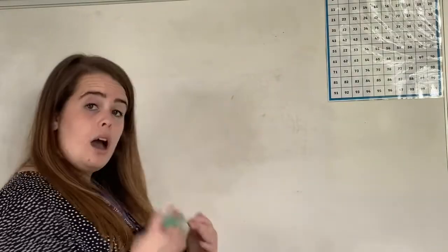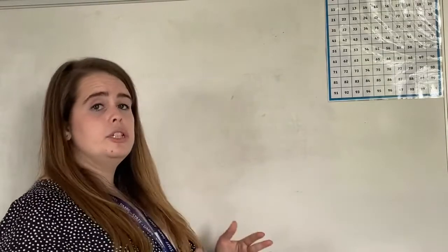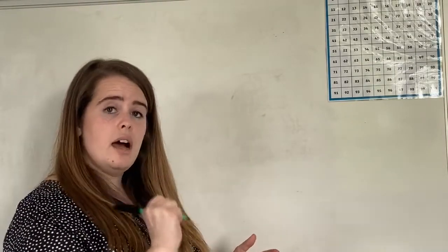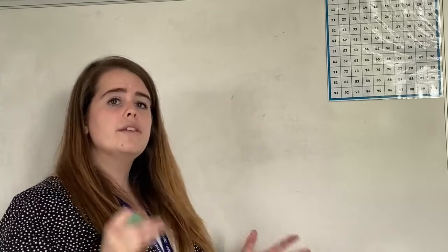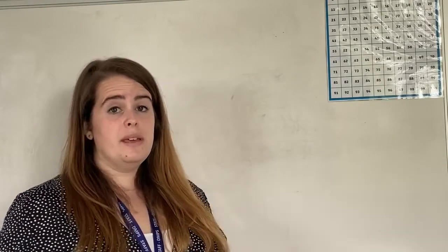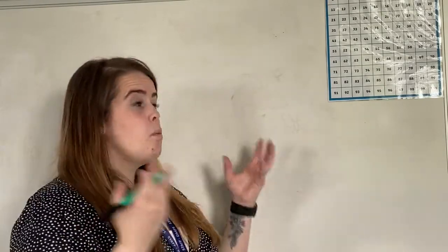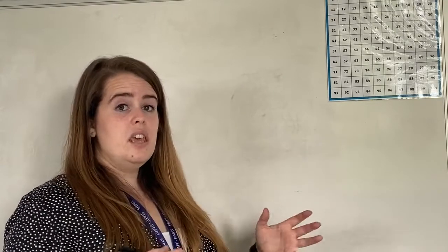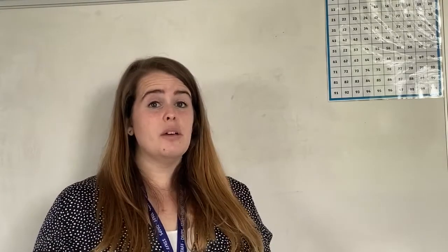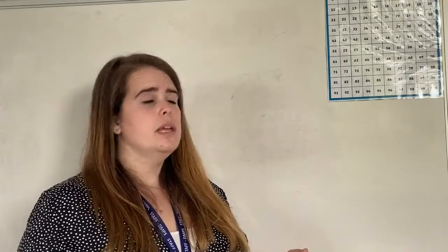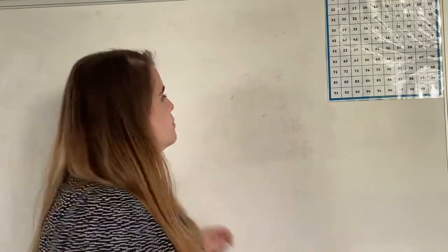I'm going to write a two-digit number down and I'm going to underline one of the numbers in the two-digit number. Your job is to tell me what that number represents. Remember we have a tens column and we have a ones column. Let's do one together first.